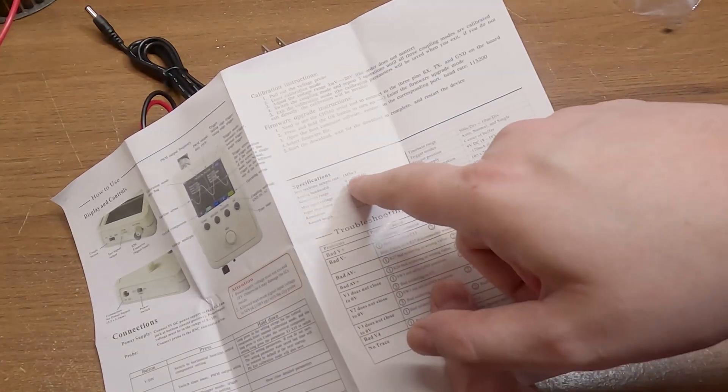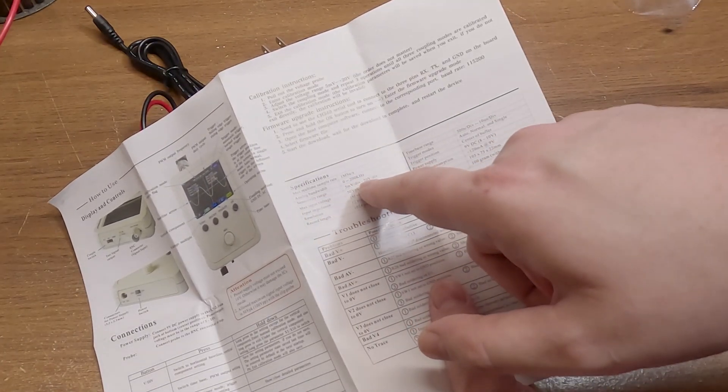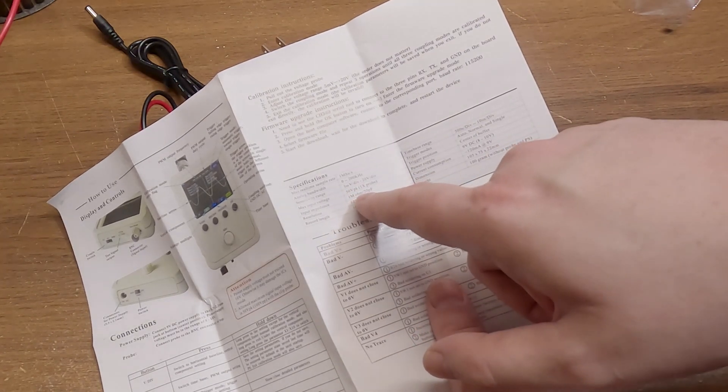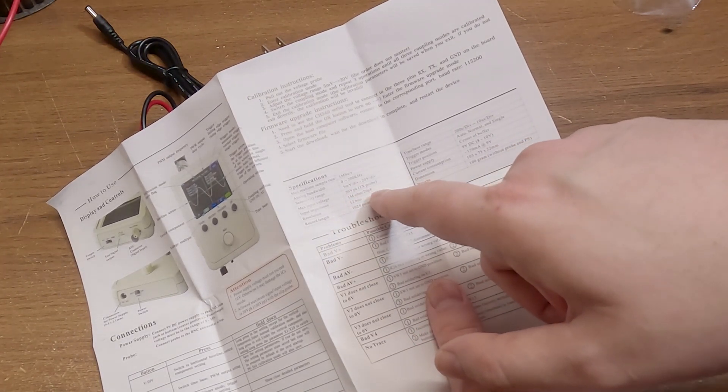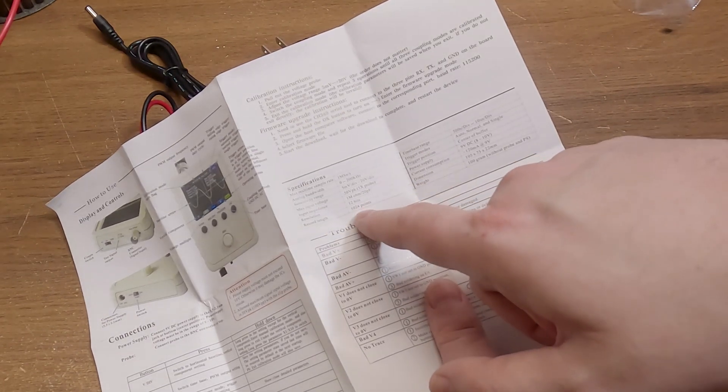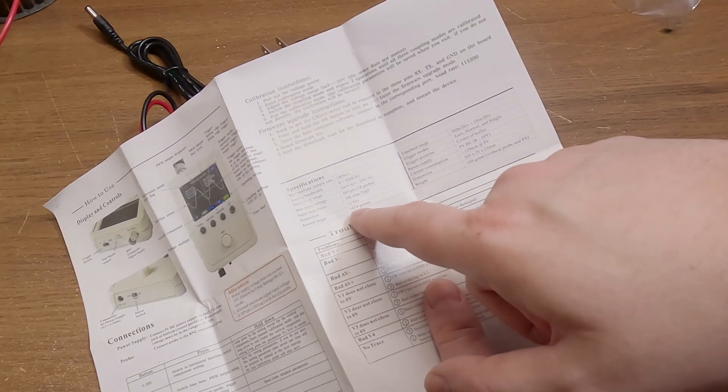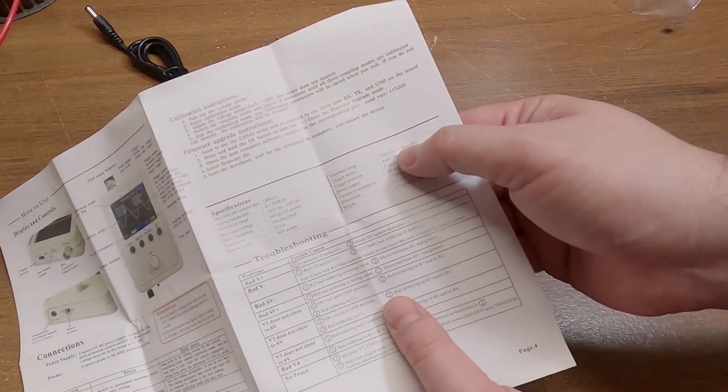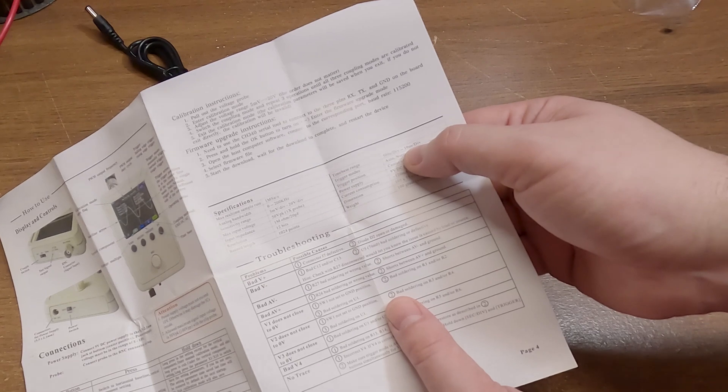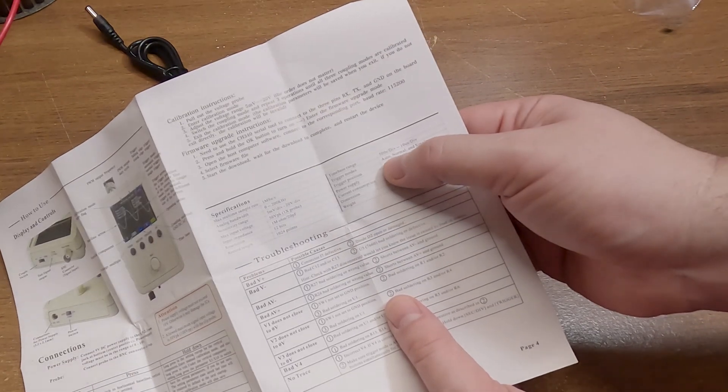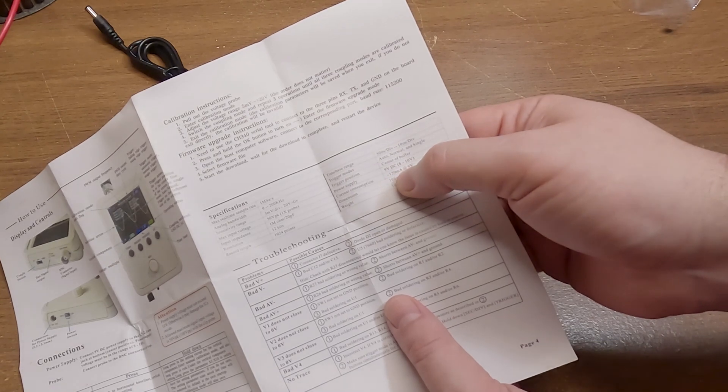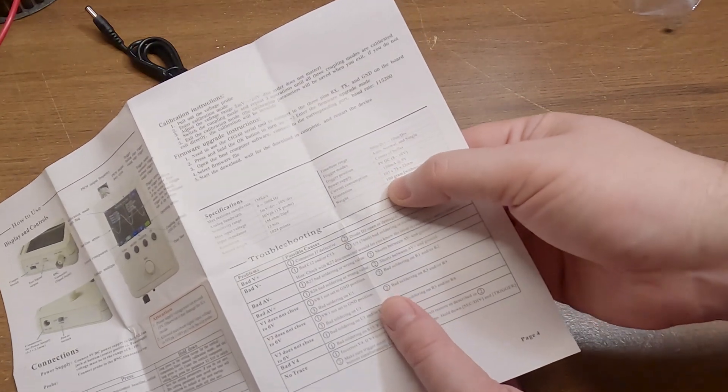Here's your specifications: has a bandwidth of 200 kilohertz, sensitivity of 5 millivolts, 1 megaohm impedance, 20 picofarads, resolution of 12 bits, record length of 124 points, time-based range of 500 seconds to 10 microseconds. Auto trigger mode which is nice. It only consumes 120 milliamps and weighs 100 grams.